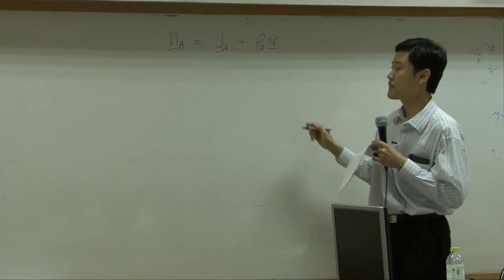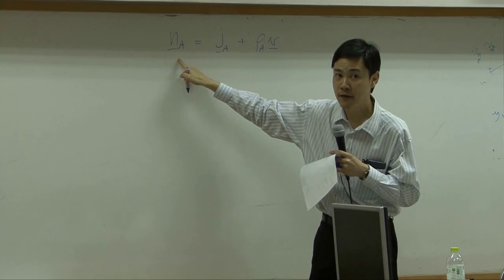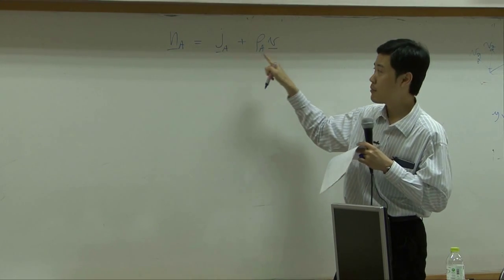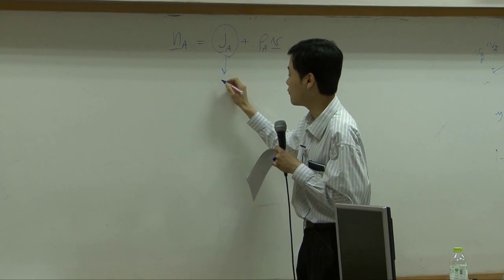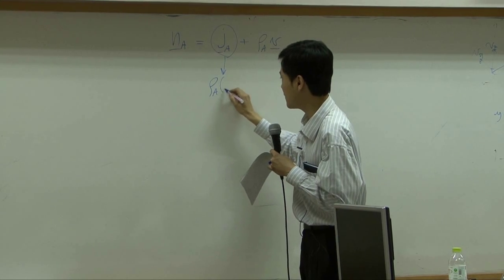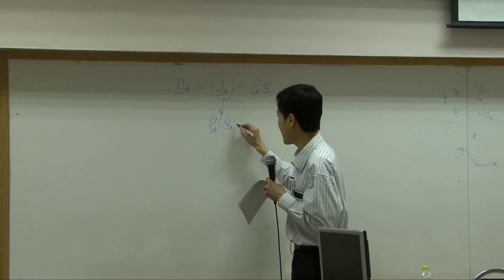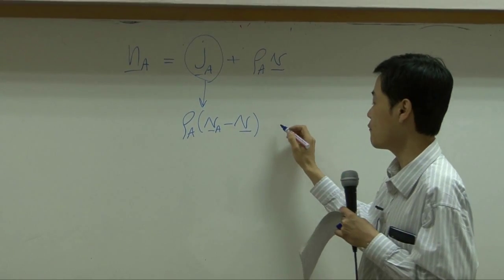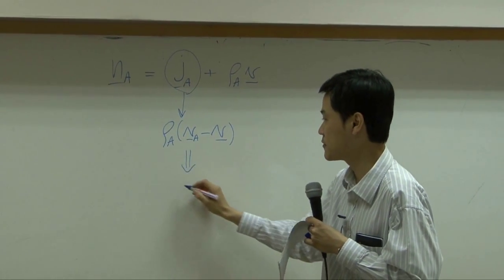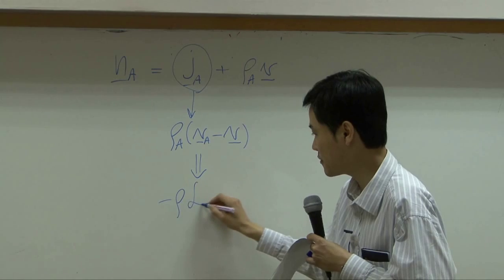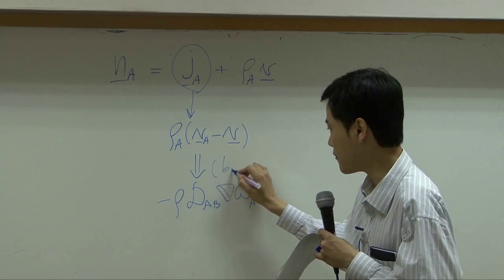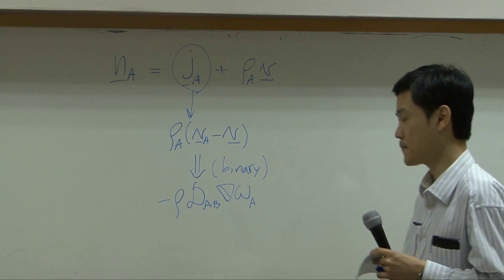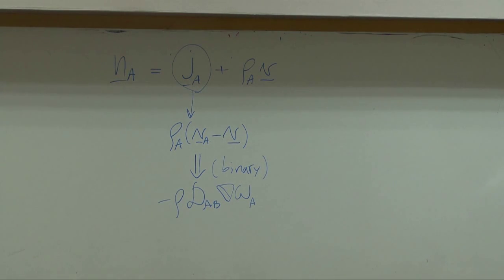So now you have combined flux equal to diffusion flux plus convective flux. Diffusion flux itself can be written as rho A, VA, minus V, which is also equal to minus rho DAB del omega A for binary system.